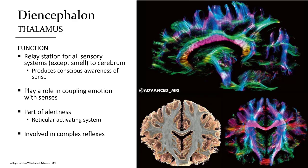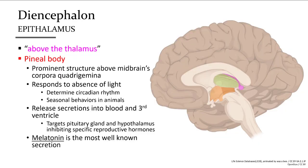The function of the thalamus is not to play a singular role but to facilitate connections to other parts of the brain, connecting sensory input with awareness — the main role of the cerebral cortex. The epithalamus is superior to the thalamus, and its largest portion is the pineal gland, located posterior to the thalamus. The pineal gland influences many parts of the endocrine system, including calcium regulation, blood glucose regulation, stress, and reproductive hormones.